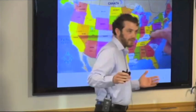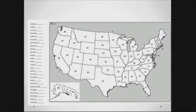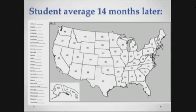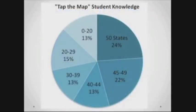So with this song, Tap the Map, students could identify all 50 states using a blank map. It took about a minute to sing, and the kids really loved it. But did it stick? The kids in that video are now a year older — it's been a year since they sang the song or I taught about the 50 states. So I gave them a blank map, a list of the states, and asked them to match as many as they could. Students averaged, 14 months later, 37 states correctly identified. For students who hadn't learned the song, it was 13 states. Nearly a quarter of students knew all the states, nearly half could say 45 or more, and nearly 75% knew 30 or more of the states.